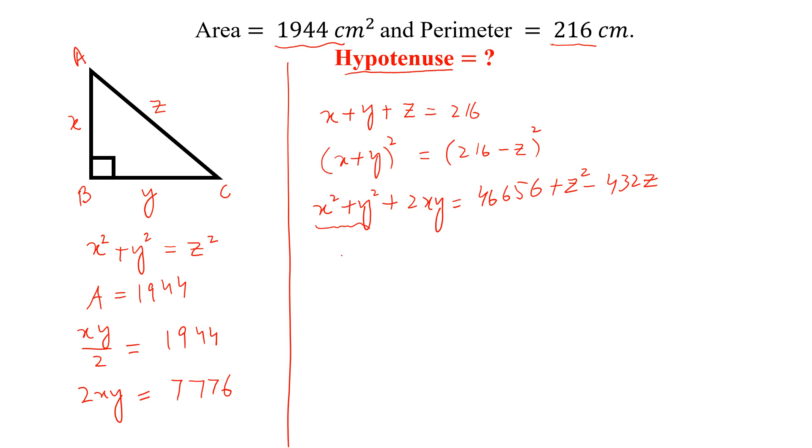Now x squared plus y squared is equal to z squared, so z squared, and 2xy is equal to 7776. So we have z squared plus 7776 equals 46,656 plus z squared minus 432z.